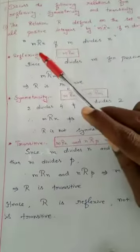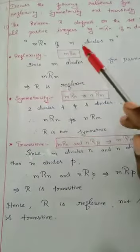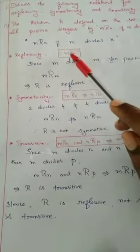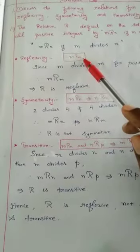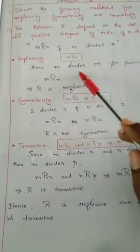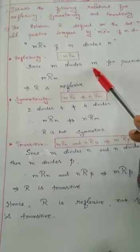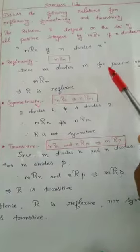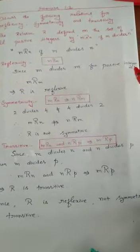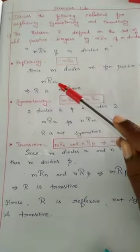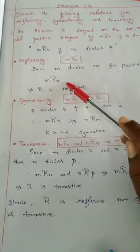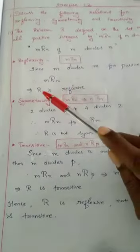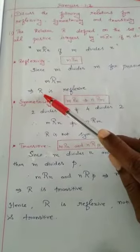First, check for reflexivity. What is the definition for reflexive relation? M is related to M itself, since M divides M. That is, every number divides itself. This is true for all positive integers. Therefore we can say M is related to M. Hence R is reflexive. Here R represents relation.